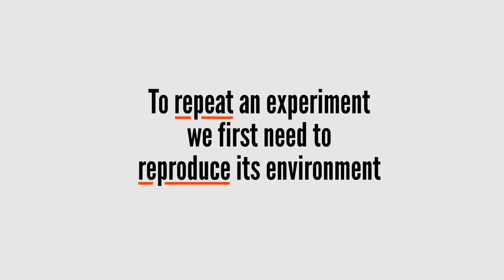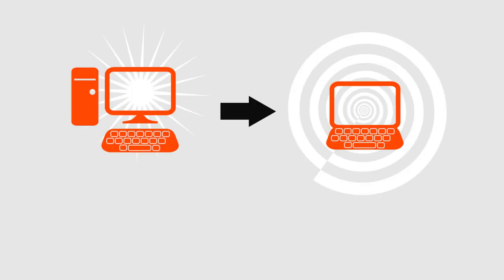This is not only true for wet lab experiments, but also for experiments and analyses involving computers. To repeat a computer-supported experiment, we need to first reproduce its software environment. This could be on the same computer a few months later, on an HPC cluster at the same institute, or even at a different site in the lab of someone building upon your work. The point is, we need to be able to capture all relevant state on one machine and be able to recreate it somewhere else.